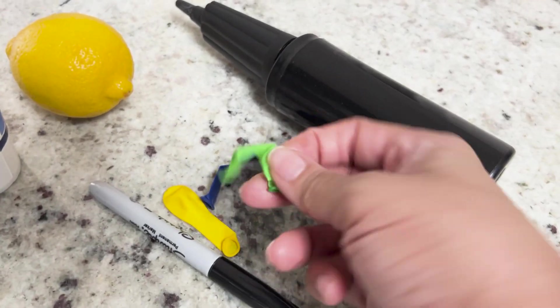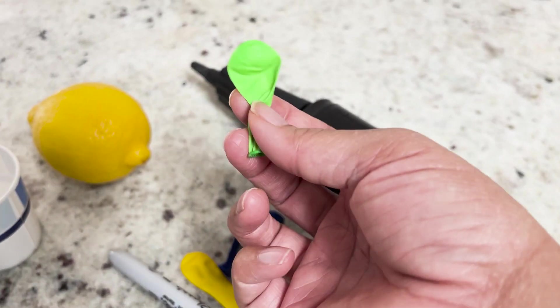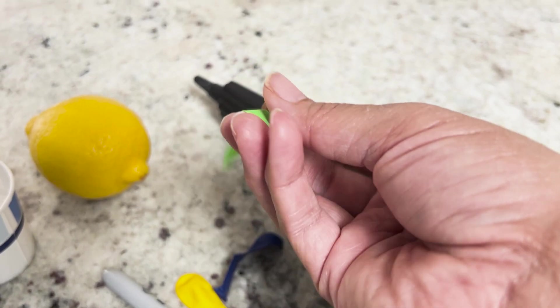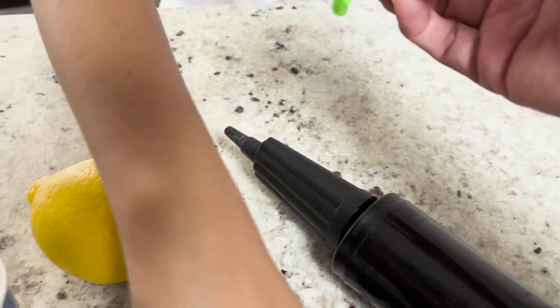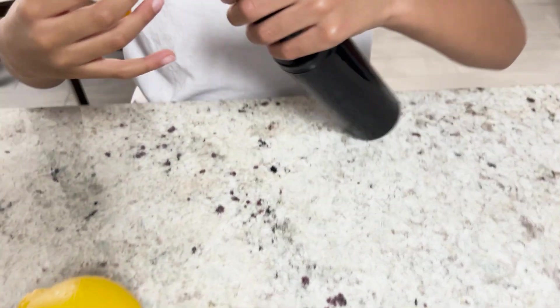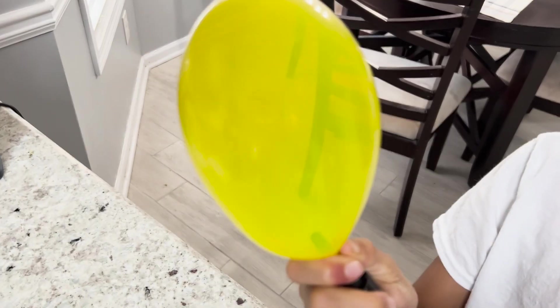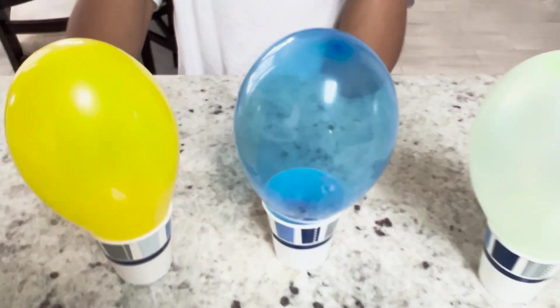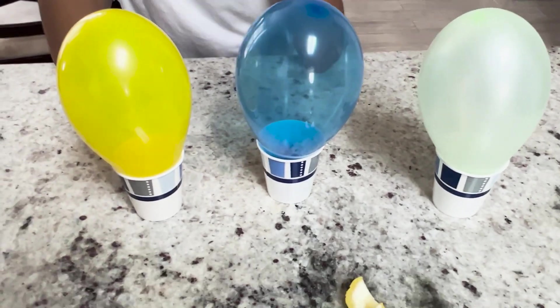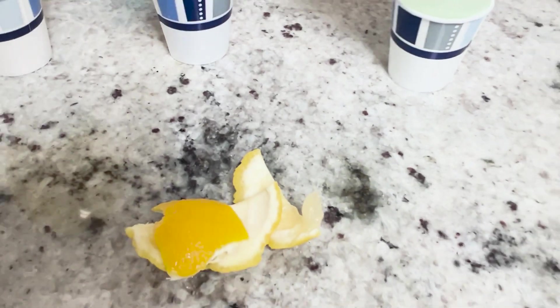And then the next step, Munch, while I do that, you blow up the balloons. Okay? Okay. Awesome. Here you go. Alright, do the yellow. Alright, we have all three balloons blown up. And we have our lemon peel.